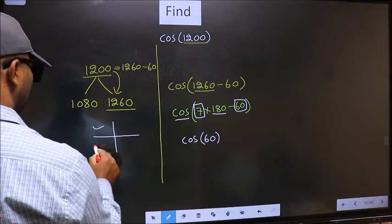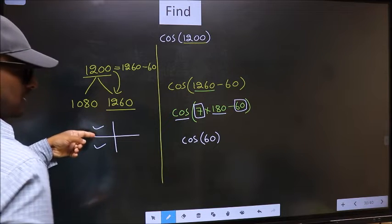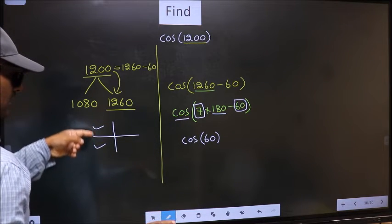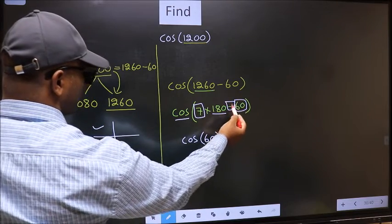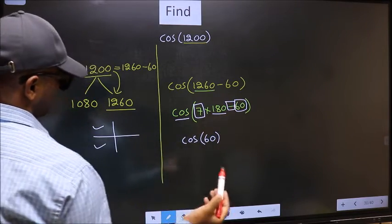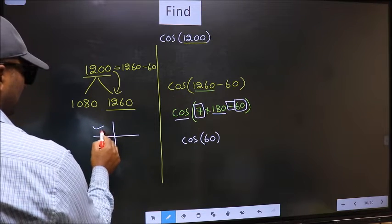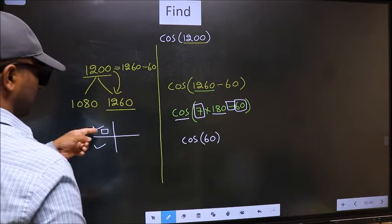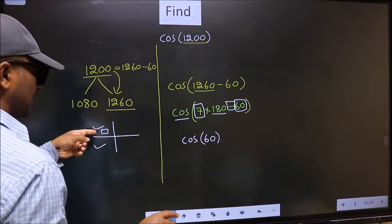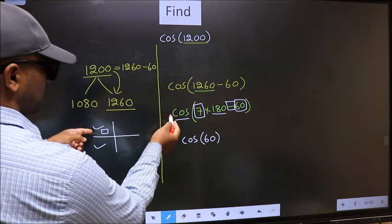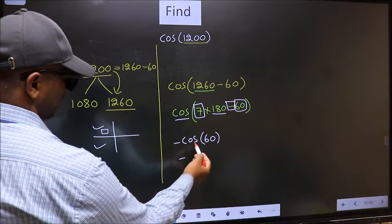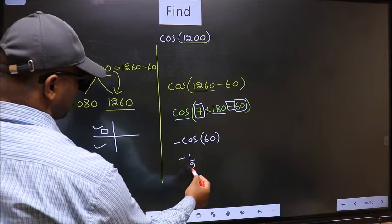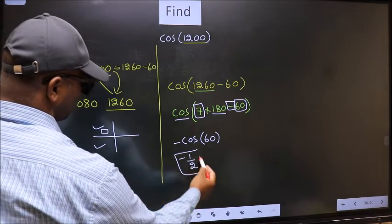So now to select the quadrant, we should look at this symbol. Here we have negative. That means the angle lies in the second quadrant, and in the second quadrant, cos is negative. So we should put negative. So negative cos 60 is 1 by 2. This is our answer.